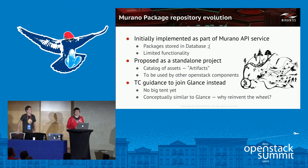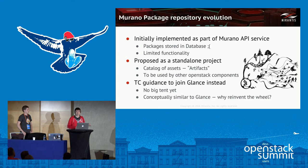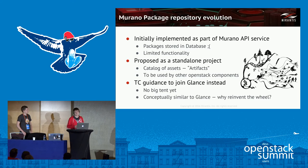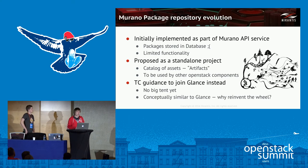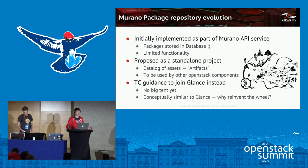At some point we understood we were reinventing the wheel — building things with no Murano specifics that other projects in the OpenStack ecosystem would probably also need. For example, Heat was thinking about how to catalog Heat templates and was using Git as storage. They needed a more appropriate way to have a catalog of packages. So we went to the community and proposed to spin up a new project — a repository of artifacts, as we call them.